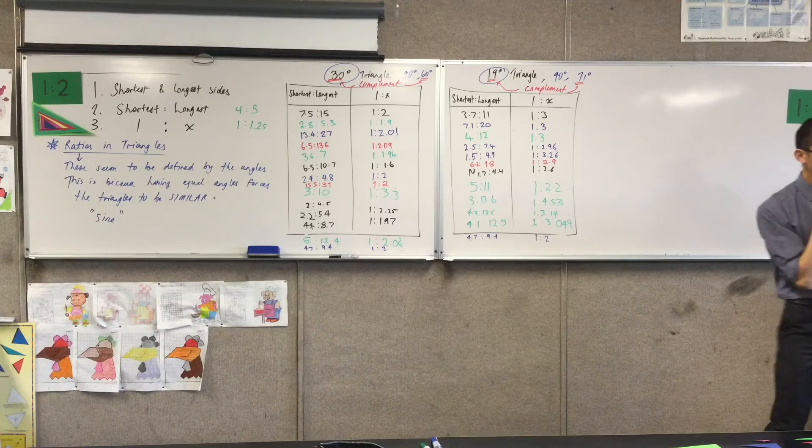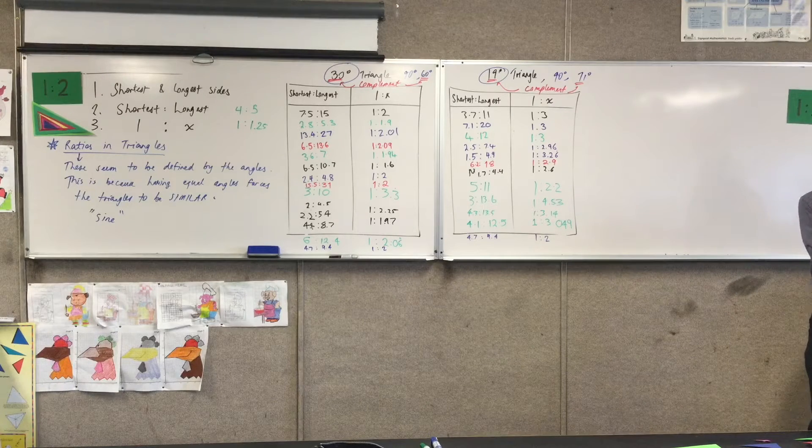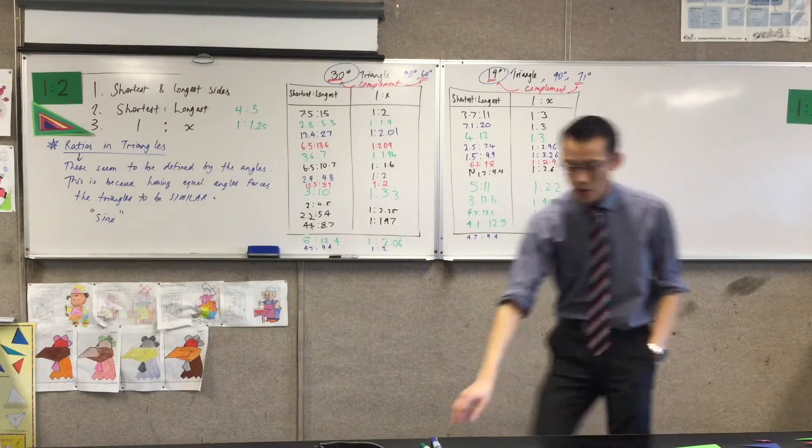In a right-angled triangle, what's the longest side called? It has a special name. It's called the hypotenuse.